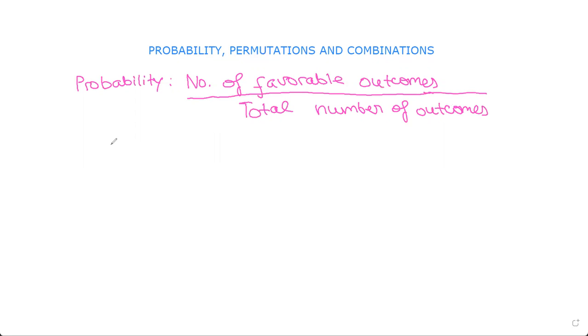So say you have a dice with six sides, and the sides are numbered 1, 2, 3, 4, 5, 6. They'll ask you what is the probability of the dice landing on 1. The number of favorable outcomes is 1 divided by the total number of outcomes, which is 6. So the probability is 1 by 6.